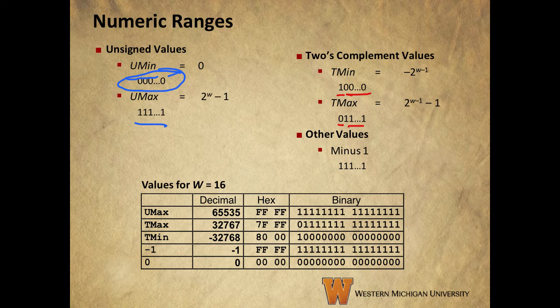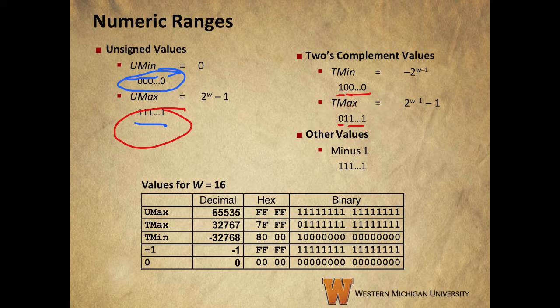For a four-bit two's complement value, the highest we can get is one plus two plus four, which is seven, and the lowest is the one in the eights place being negative, so negative eight. Also worth noting: while the unsigned maximum is a string of all ones, in two's complement a string of all ones always equals negative one. The table for 16-bit words shows these values in binary, decimal, and hexadecimal so you can study those representations.